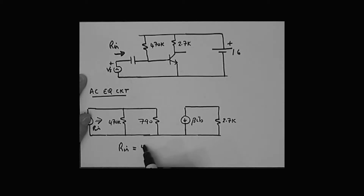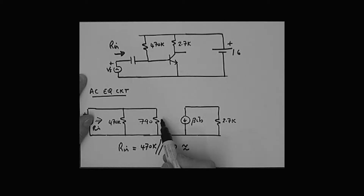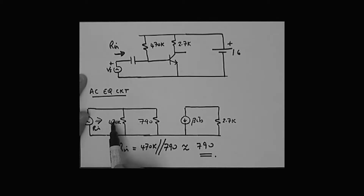So R_in equals 470k in parallel with 790 ohms. Notice that 790 is very small compared to 470k, so to a very good approximation, the input resistance is dominated by the 790 ohm term and is approximately 790 ohms. That's the input resistance that the signal source sees. We'll be doing more with input resistance later, especially when we get to amplifying chips such as op-amps.